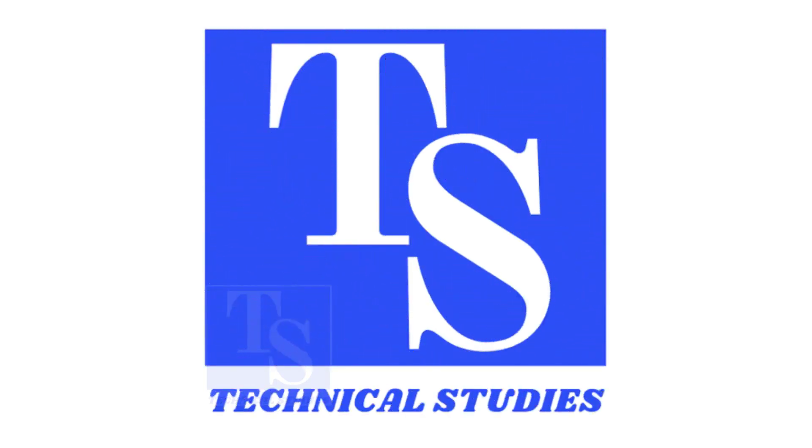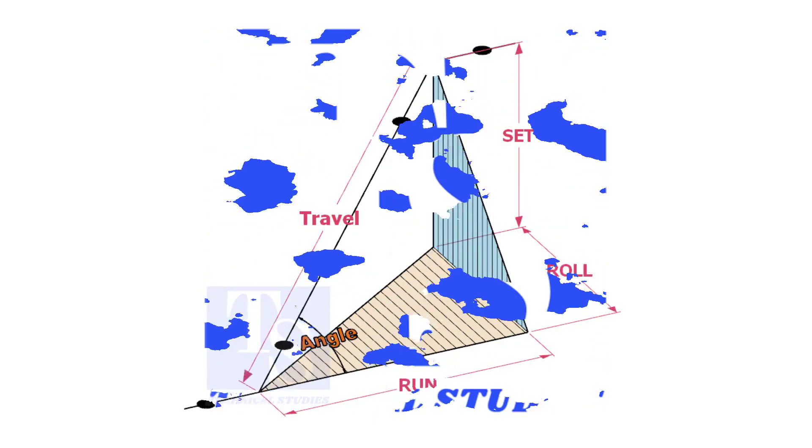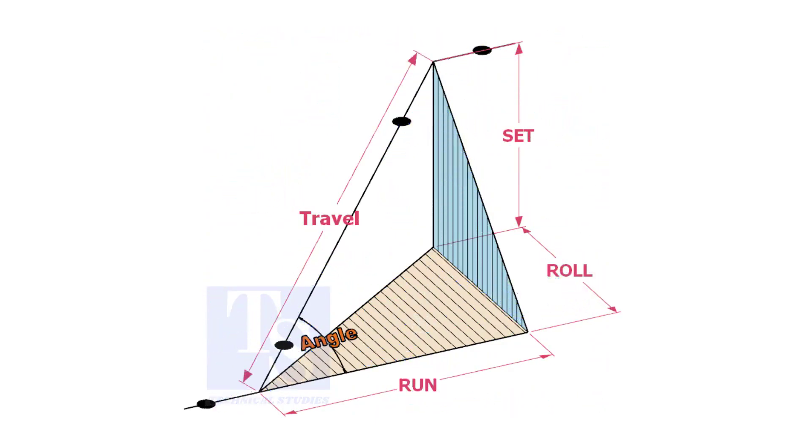Welcome to Technical Studies. In a piping drawing of a double rolled offset, usually the dimensions of the run, set, and roll are given.